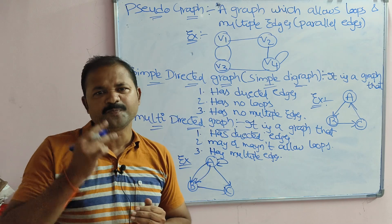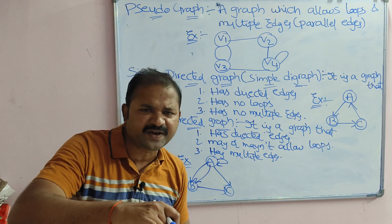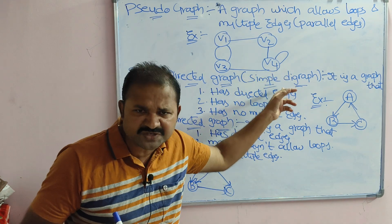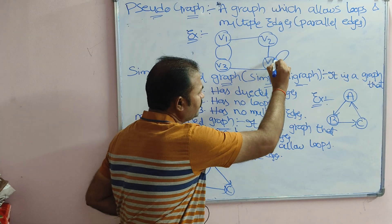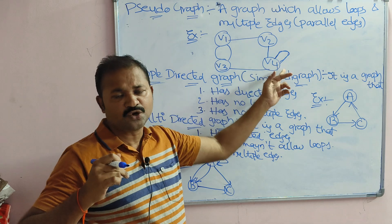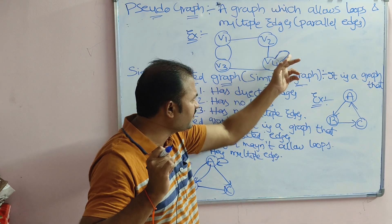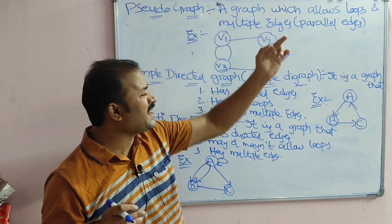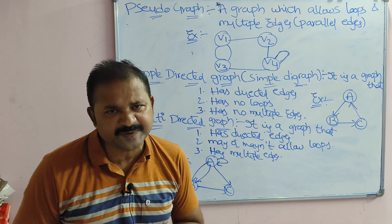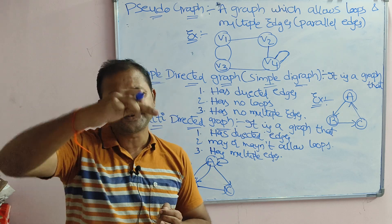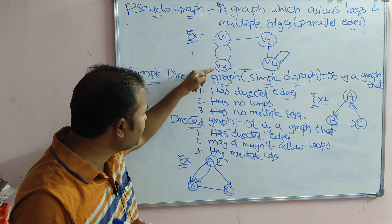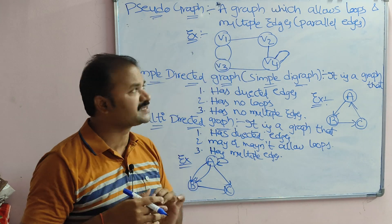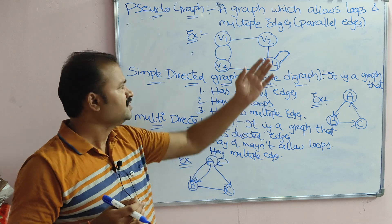What is a loop? A loop is an edge where the source vertex and destination vertex are the same. If we consider V4, here V4 is both the source and destination vertex — we have an edge from V4 to V4, so we call this a loop. Next, multiple edges or parallel edges means more than one edge between a pair of vertices. If we consider V1 and V3, here we have two edges between V1 and V3, so we call these parallel or multiple edges.